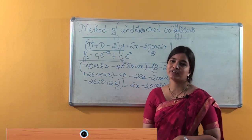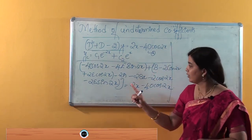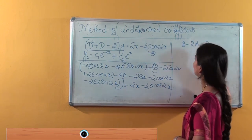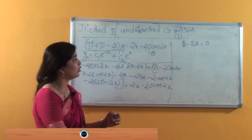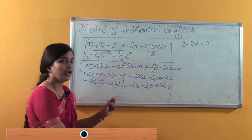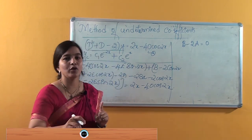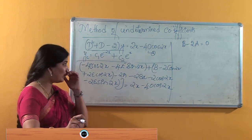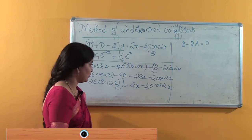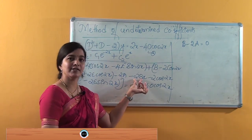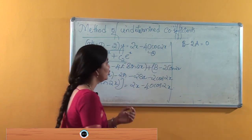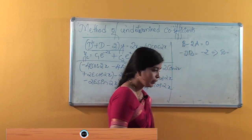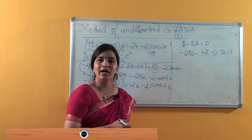When we compare the coefficients of constants, we get B minus 2a equals 0. Both B and A are unknowns; for two unknowns we need two equations. Comparing the coefficients of x, the coefficient of x on the right-hand side is 2, so we get minus 2b equals minus 2, which gives b equals 1. Wait — this gives B equal to minus 1.